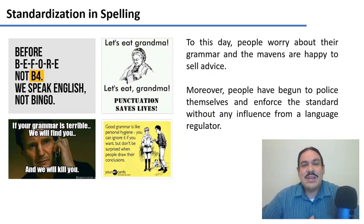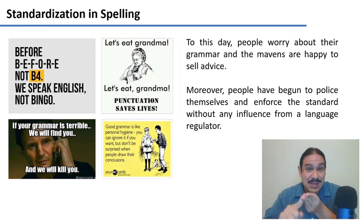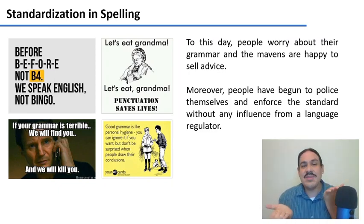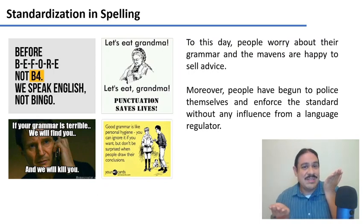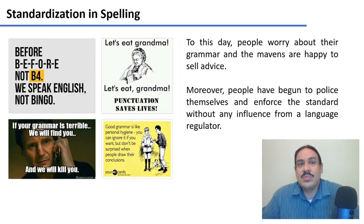Conforming to the way the upper class wanted English spelled was a very effective gatekeeping mechanism. And to this day, it still is. People have been sold the ideology that there should be one way of writing, and if you do not write that way, you are somehow dumb or dirty. There are all sorts of associations created between spelling variation and immorality, hygiene, and so forth. Now people police each other because they've been convinced that writing is something only super-educated people know how to do properly.